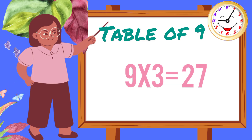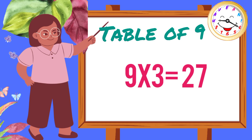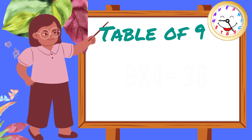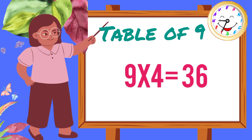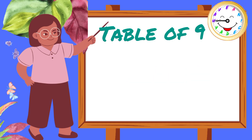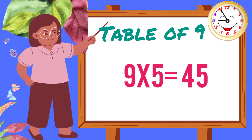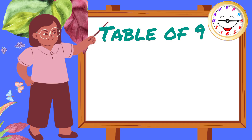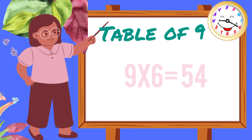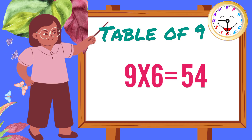Nine threes are twenty-seven. Nine fours are thirty-six. Nine fives are forty-five. Nine sixes are fifty-four.